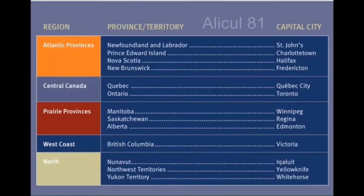The following list identifies the capital cities in each province and territory. In the Atlantic provinces, St. John's is the capital of Newfoundland and Labrador. Charlottetown is the capital of Prince Edward Island. Halifax is the capital of Nova Scotia. And Fredericton is the capital of New Brunswick.